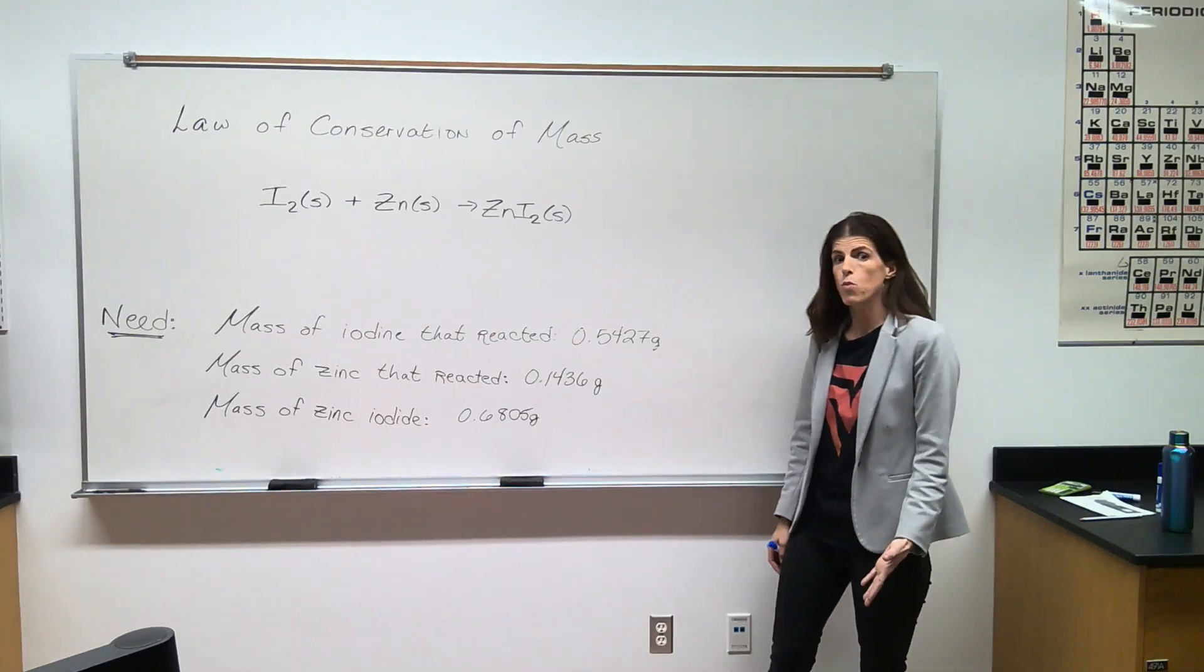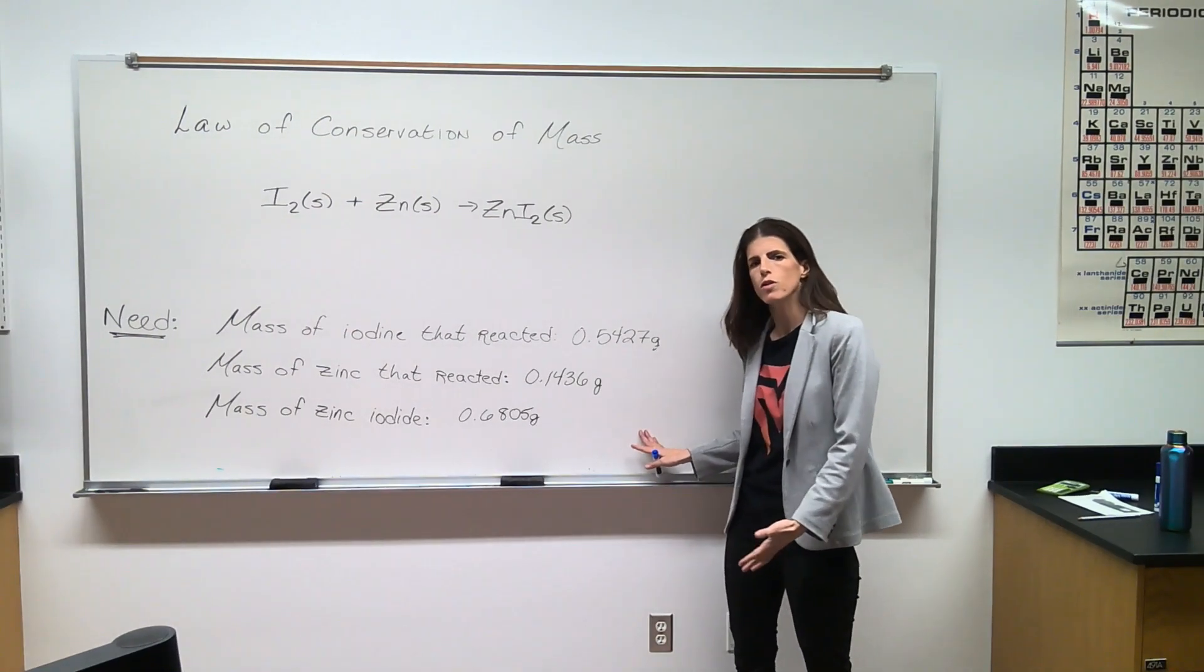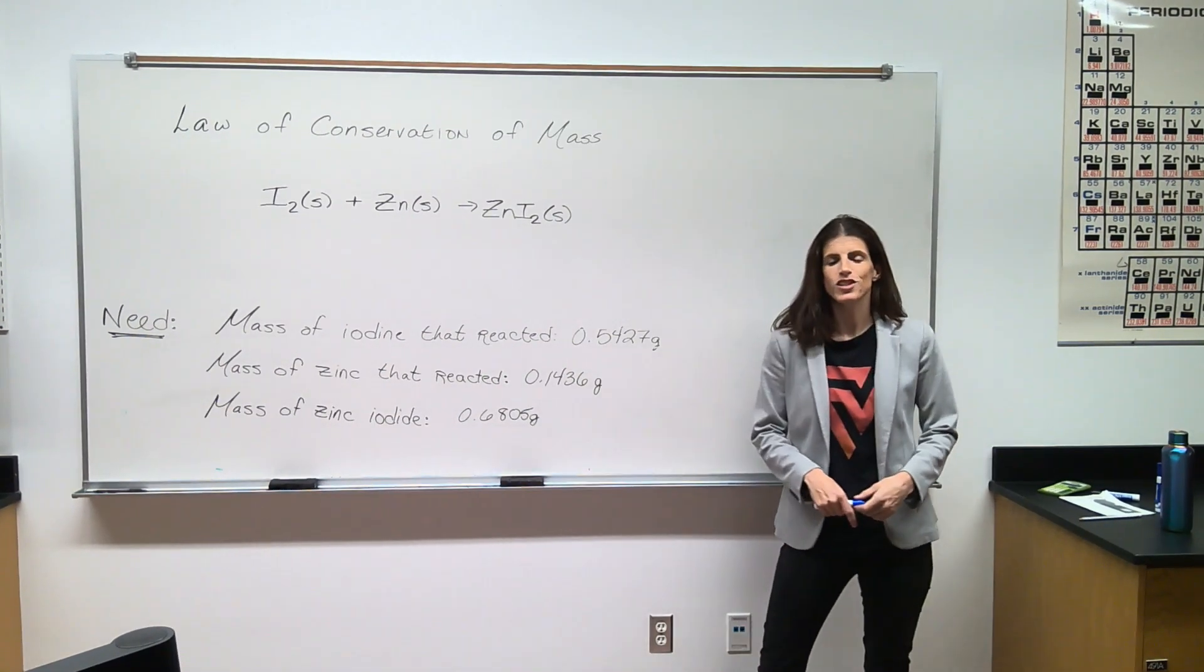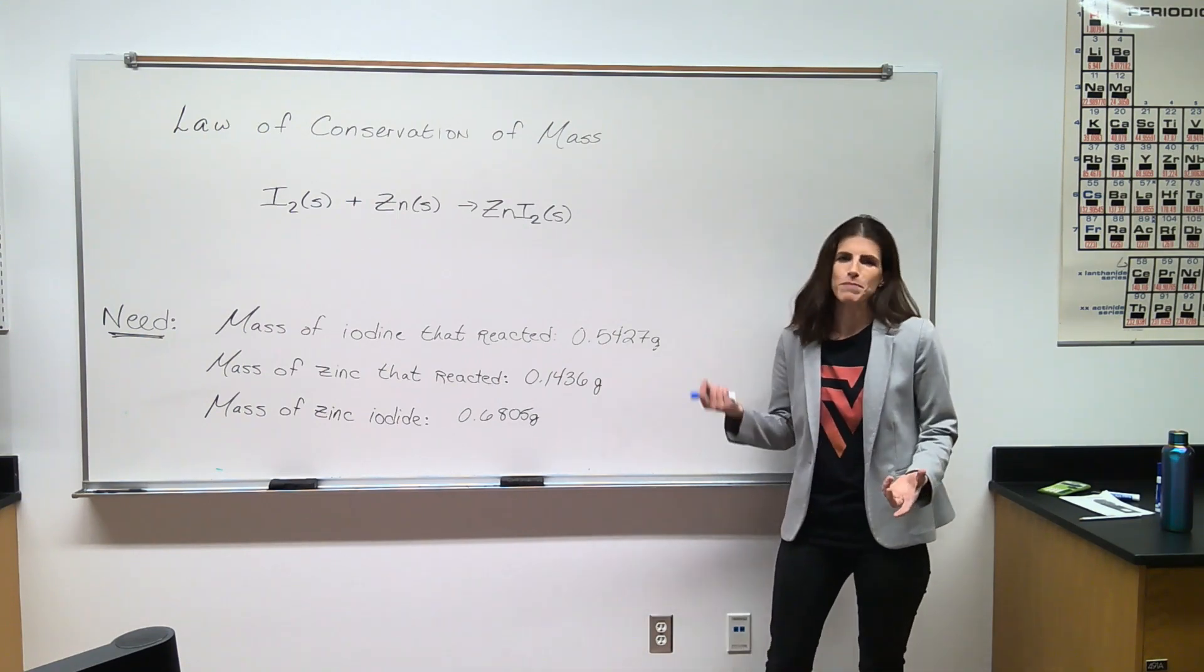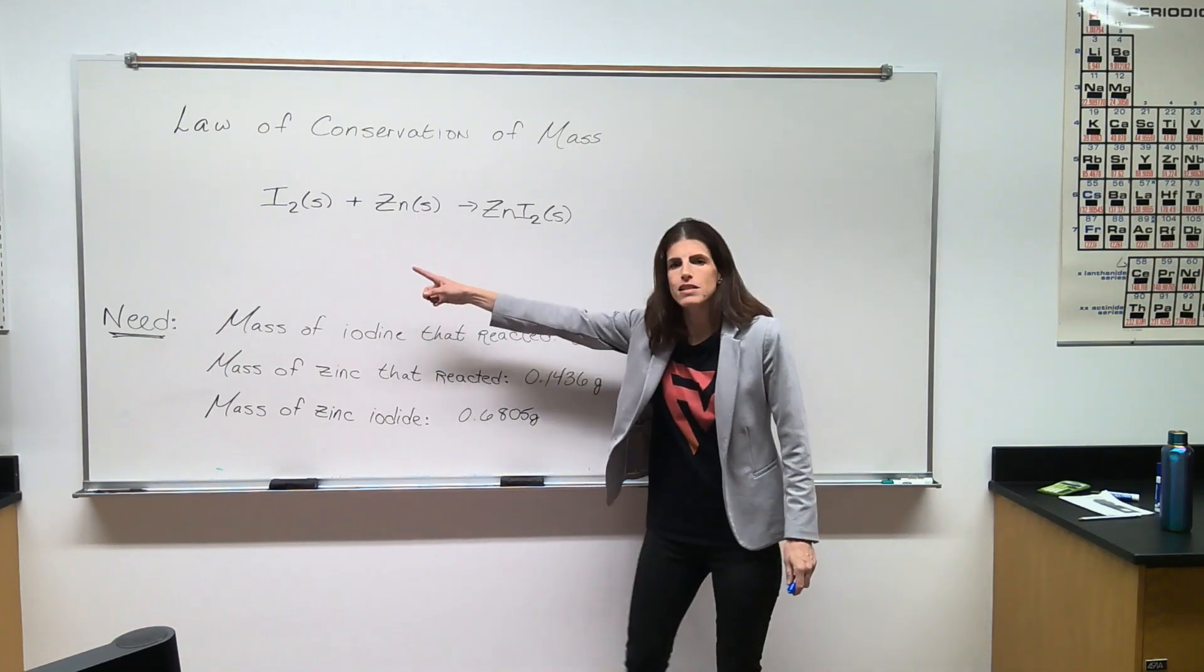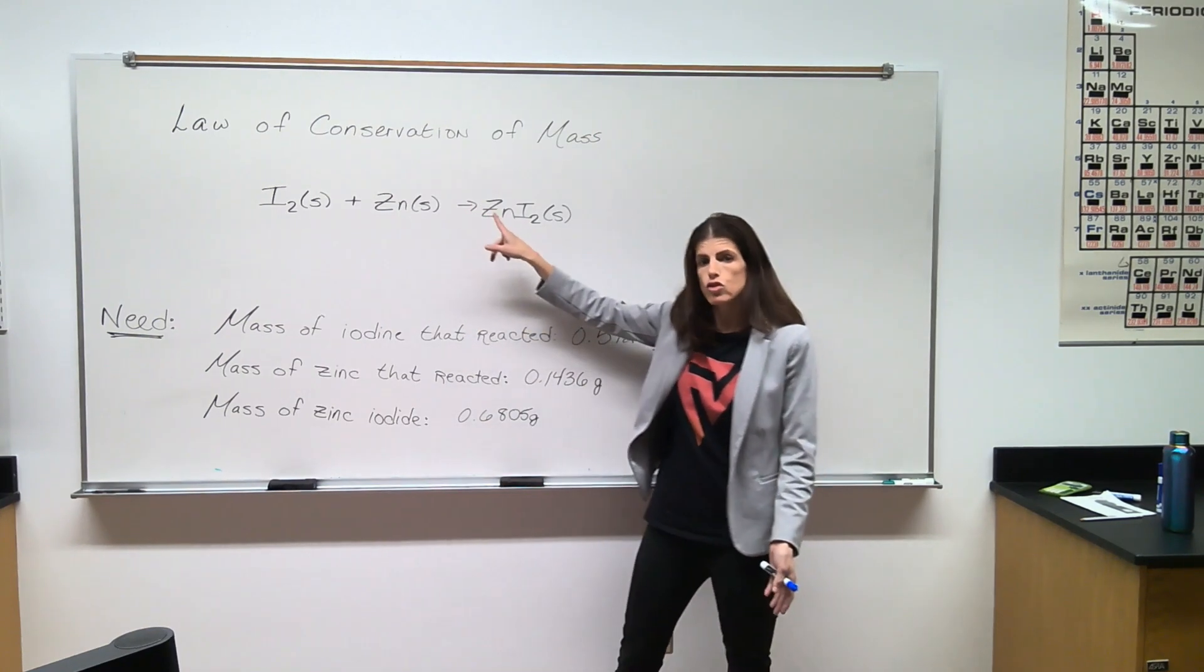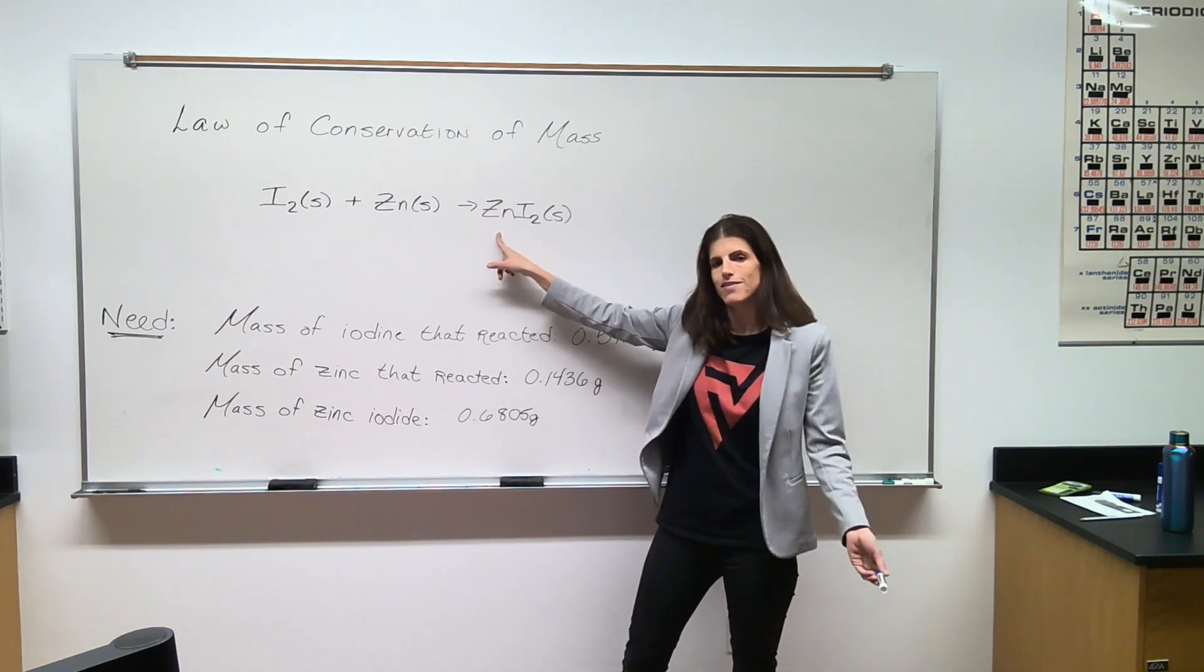At this point, you might be wondering why did we calculate the mass of zinc iodide earlier. Well, knowing this value will allow us to look more closely at the law of conservation of mass. The law of conservation of mass tells us that matter can't be created and matter can't be destroyed. So for this experiment, that means that the mass of iodine that we put in the beaker plus the mass of zinc that reacted should equal the mass of zinc iodide product that was formed. So let's evaluate.